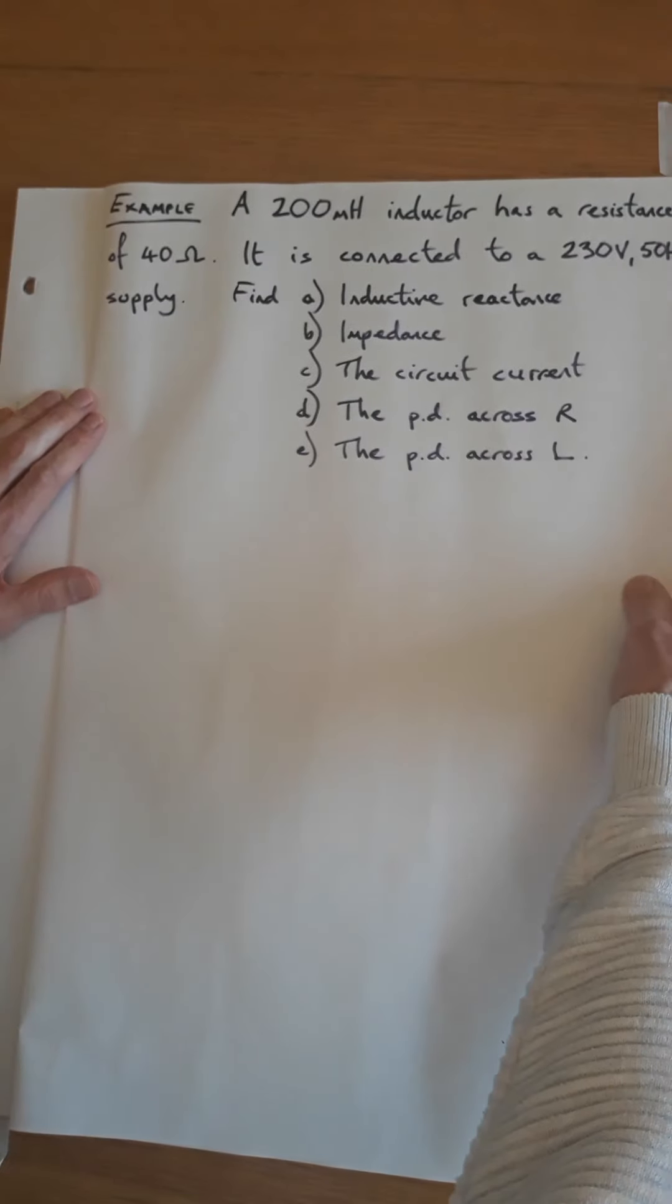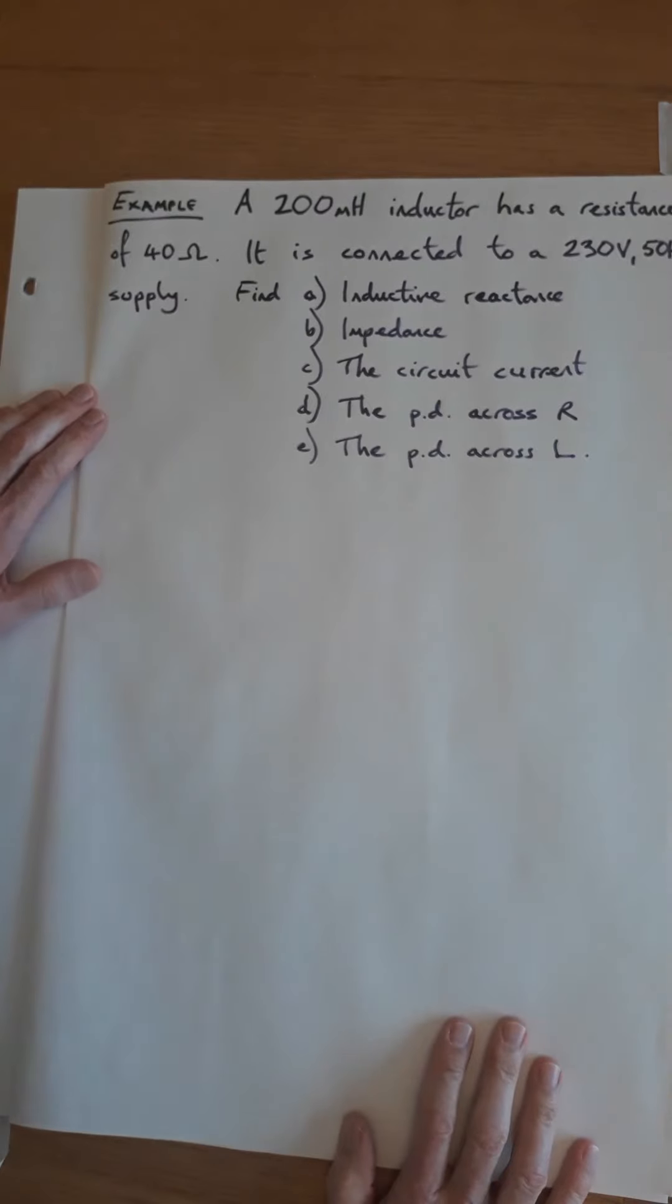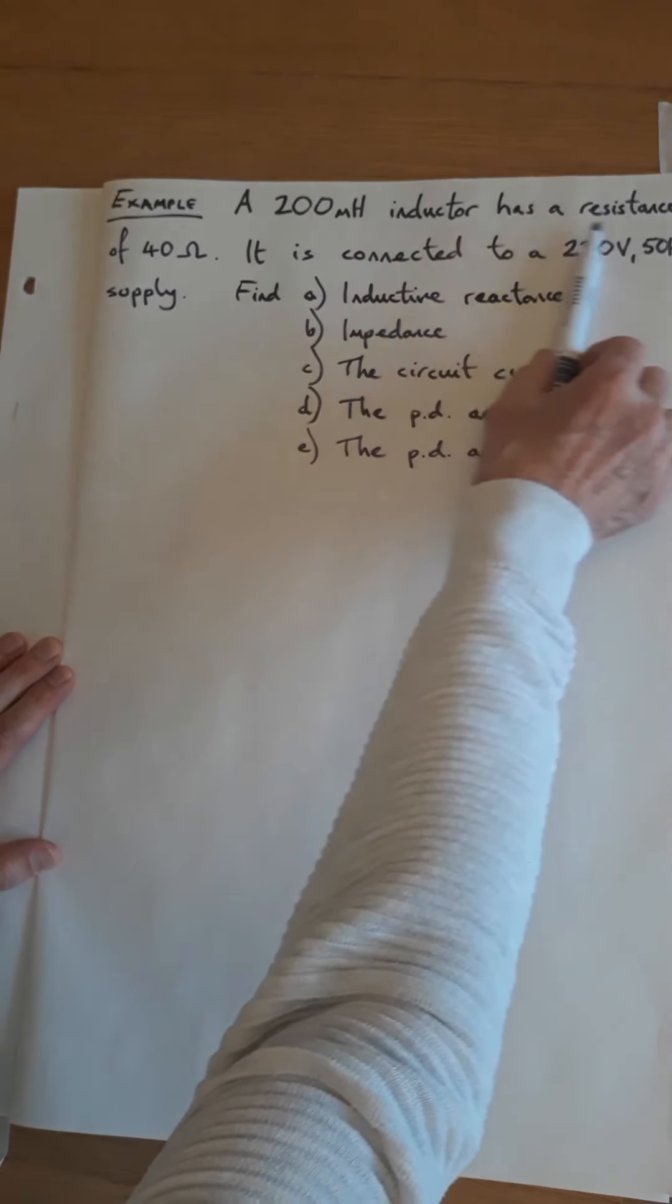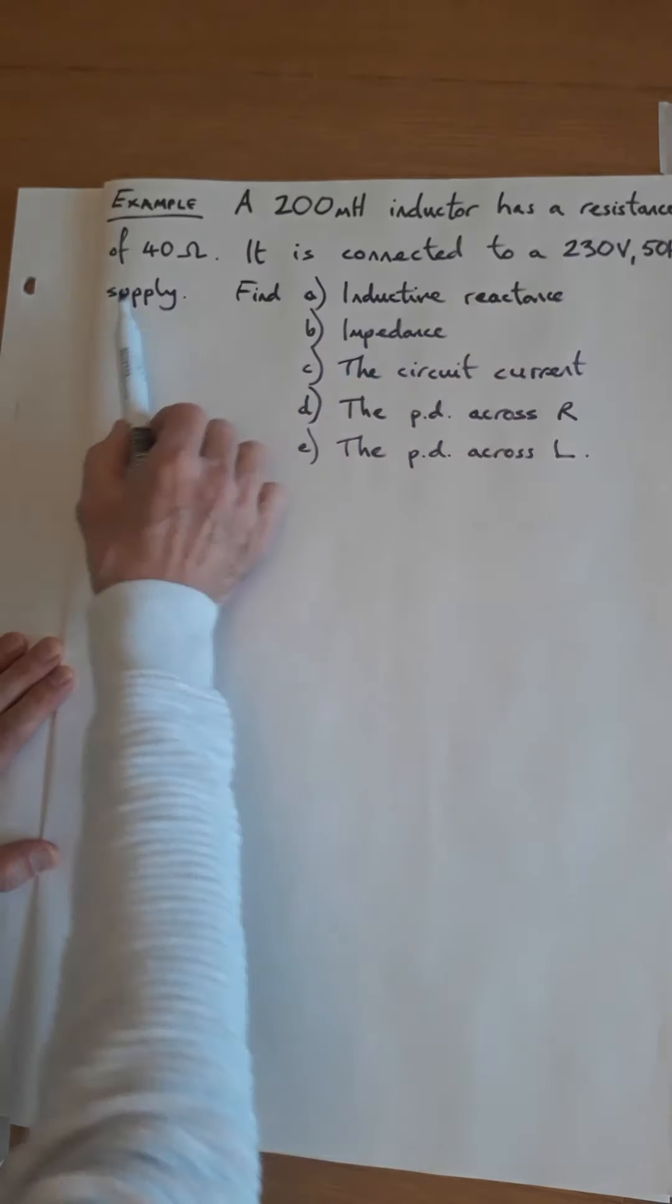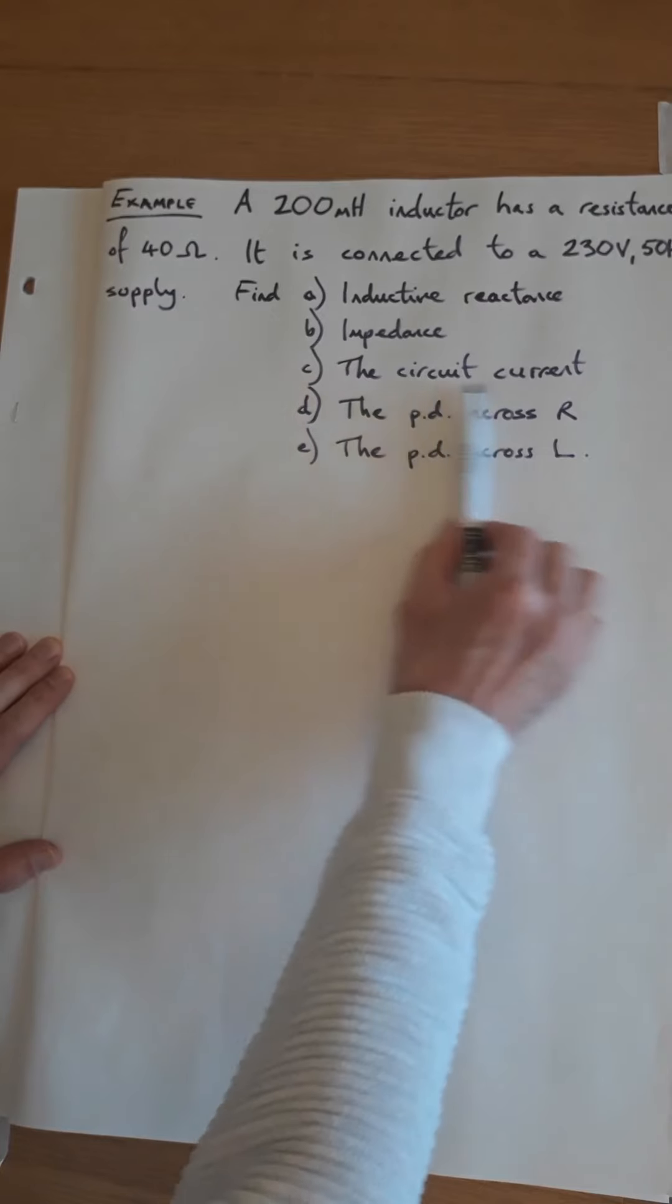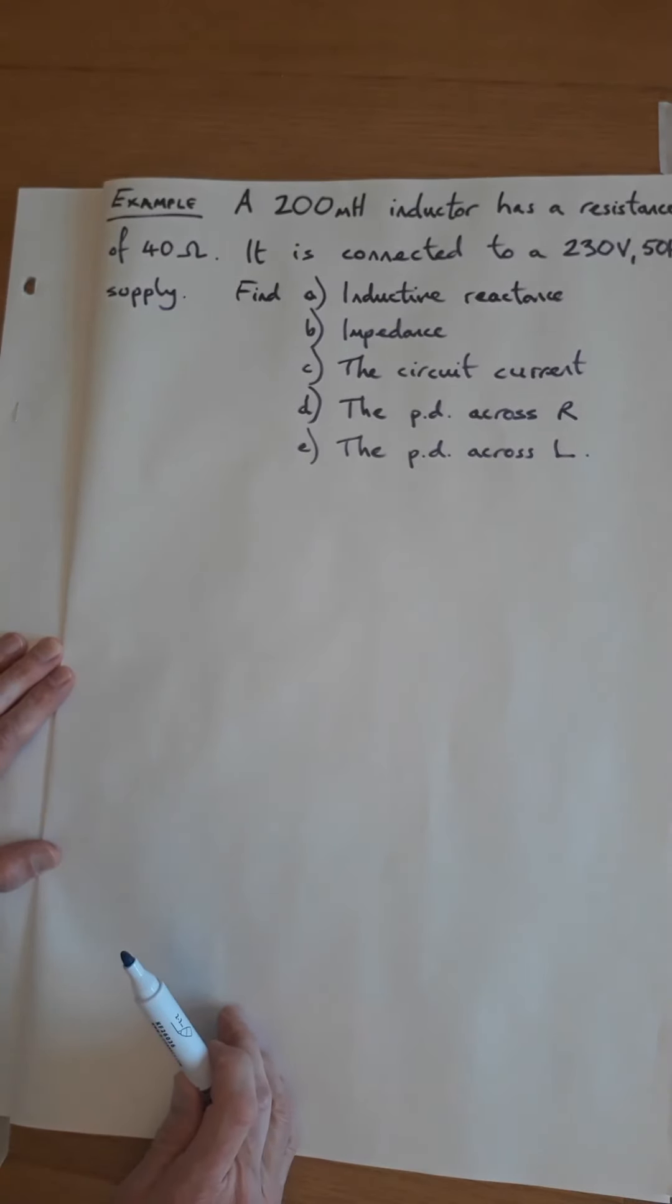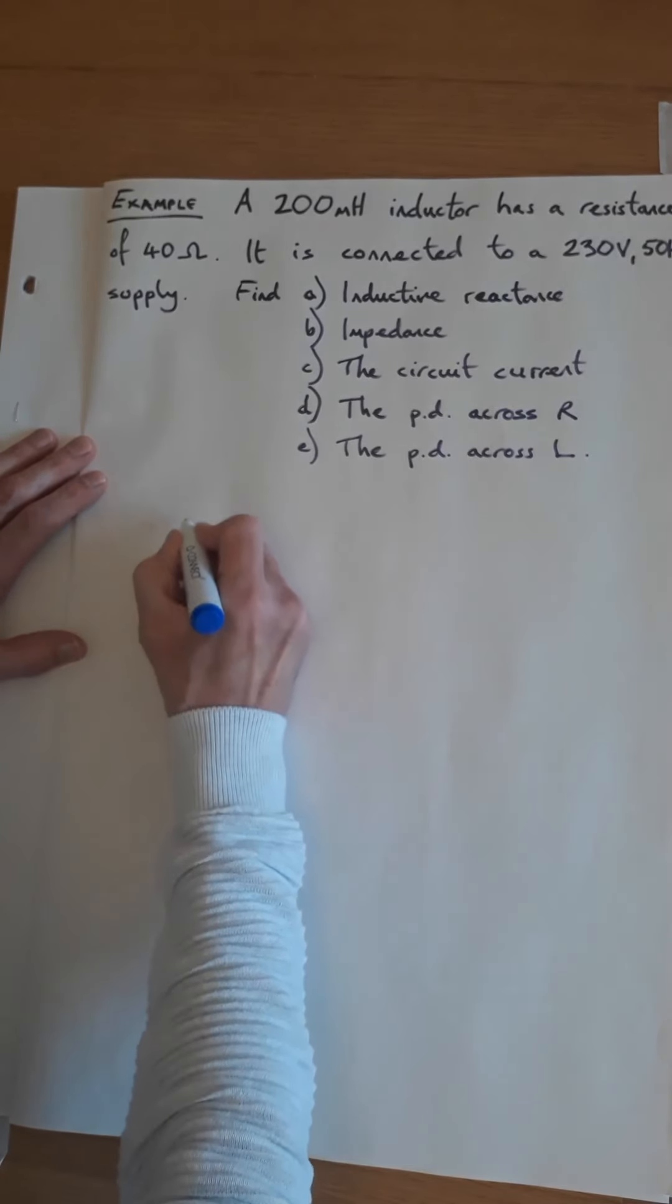So let's have a look at an example calculation. I'll do a lengthy example which contains all of the component parts that you're likely to need to calculate. So let's read this: A 200 millihenry inductor has a resistance of 40 ohms. It is connected to a 230 volt 50 hertz supply. Find: inductive reactance, impedance, the circuit current, the voltage PD across the resistor, and the voltage PD across L.